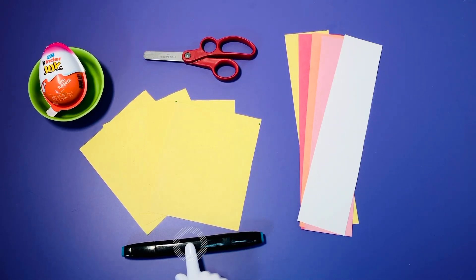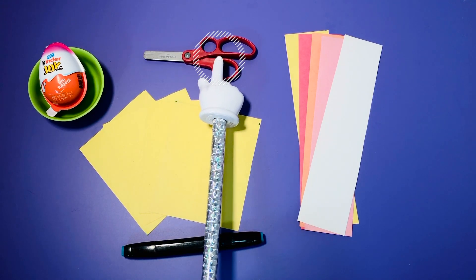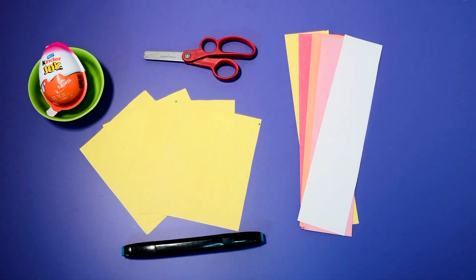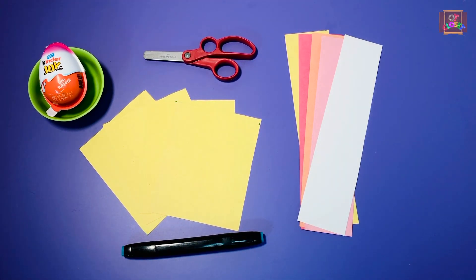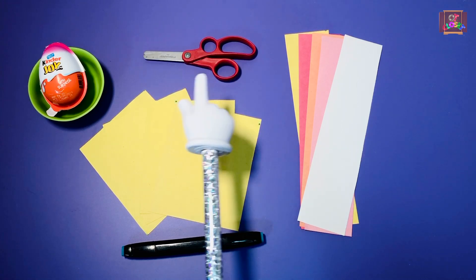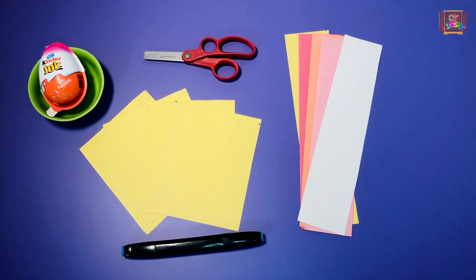For this activity you will need a pen or a marker, scissors, and some construction paper. Once you get the paper, your parents will help you cut four squares and five strips of paper about two inches in width. See you when you get it.